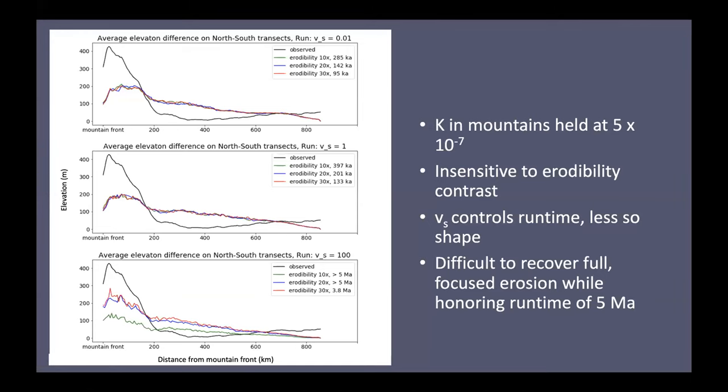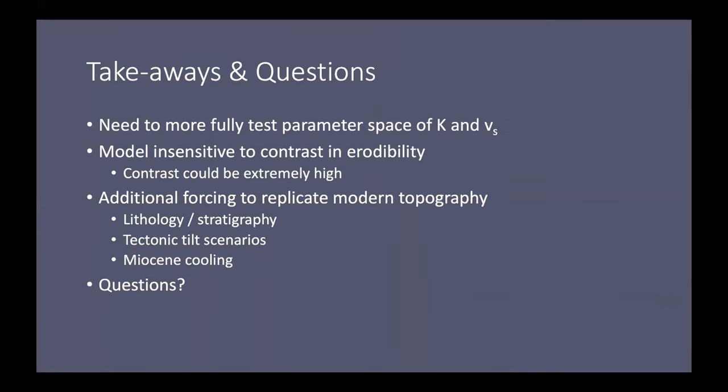So where do these results leave us? Basically what we know at this point is that we need to more fully test the parameter space of both the erodibility and the effective grain size. These are, there's going to be a range of solutions that give us the curve that we're looking for. The model seems to be insensitive to a contrast in erodibility, but it's also possible that the contrast is just much higher than what I've shown you here. And lastly, another possibility is that we need some additional forcing to replicate the modern topography, whether that means honoring differing erodibility values in stratigraphy or inducing some sort of external forcing like tectonic tilting or climate change. So with that, I'll take any questions.